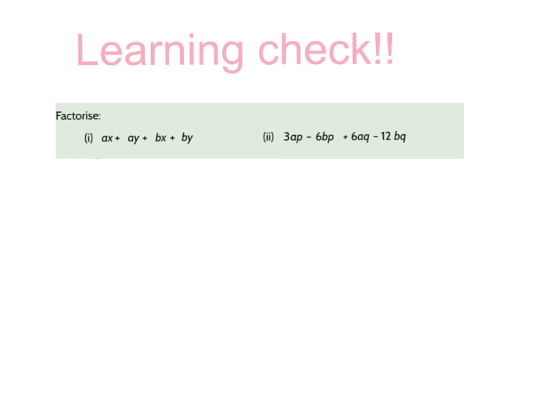3ap minus 6bp plus 6aq minus 12bq. And again remember you're looking for the highest factor that you can take out of all of these. The common. This is to be done into your copies and I'll check them tomorrow. Thank you.